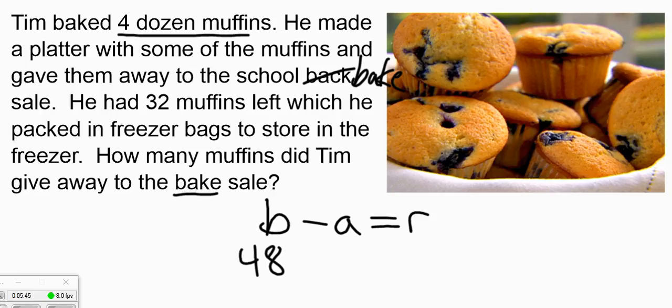He made a platter with some of the muffins and gave them away to the school. So that becomes our unknown, what went away. Because our next number, 32, tells us he had 32 muffins left over which he freezes. So we have that for our equation to be able to solve this.